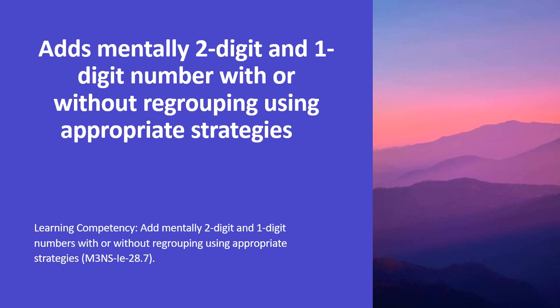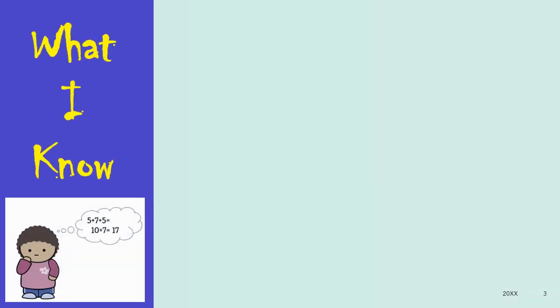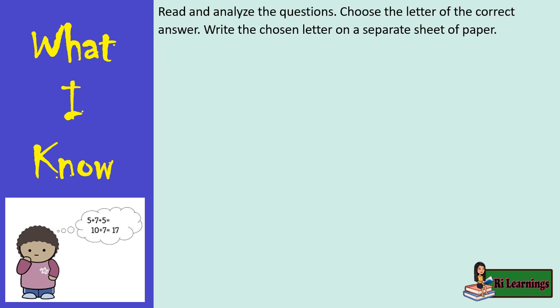Adds mentally two-digit and one-digit numbers with or without regrouping using appropriate strategies. Read and analyze the questions. Choose the letter of the correct answer. Write the chosen letter on a separate sheet of paper.